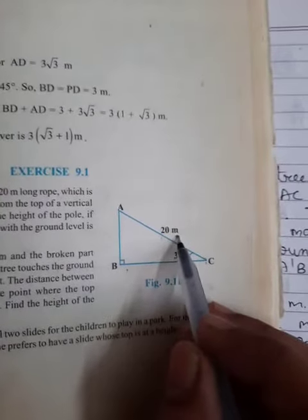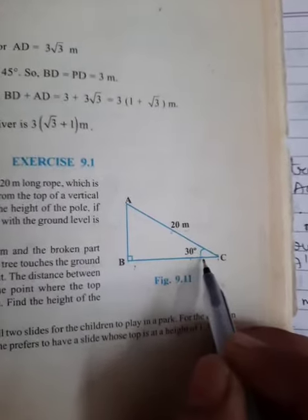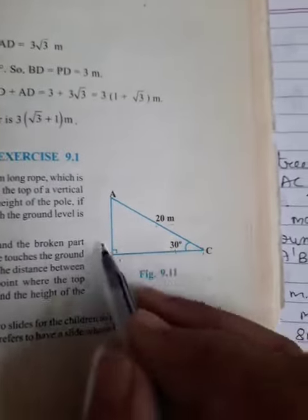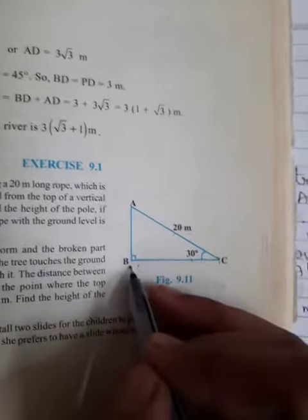The rope is 20 meters long and the angle of elevation from the ground is 30 degrees. We have to find the value of AB, the height of the pole.